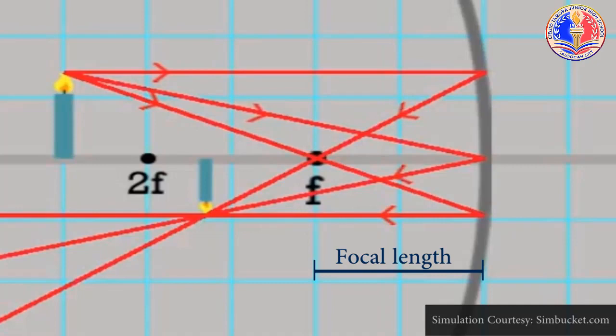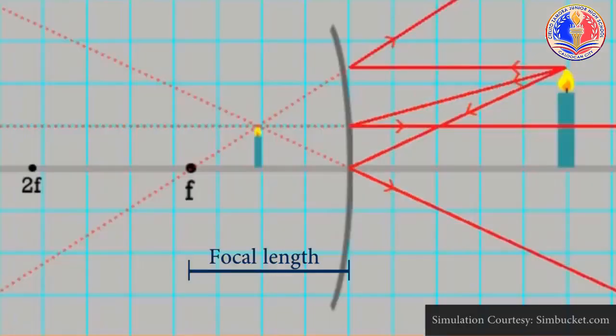Focal length is positive if the mirror is concave. Focal length is negative if the mirror is convex.